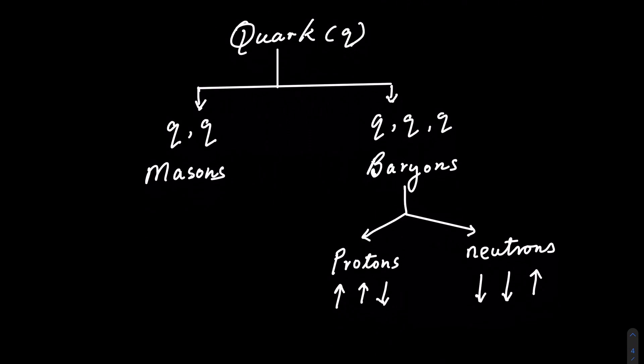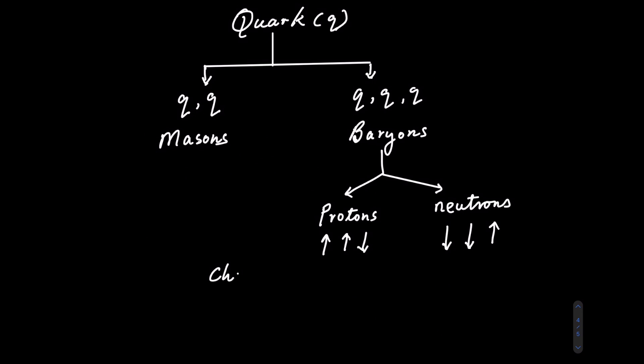We normally classify elementary particles using their charge or their spin. Protons have a positive charge, which is the same as that of an electron, only that it's positive, whereas a neutron has a zero net charge. Protons have a plus half h-bar spin and neutrons have a negative half h-bar spin.